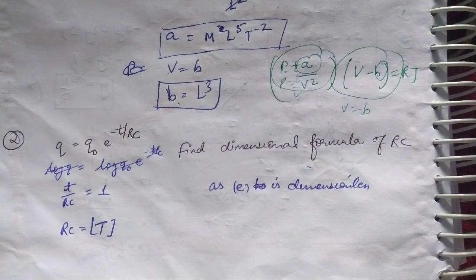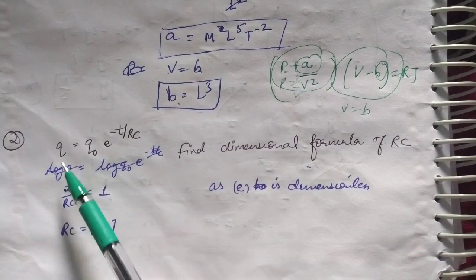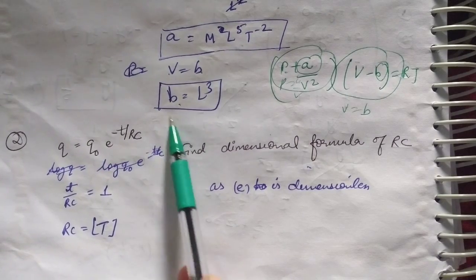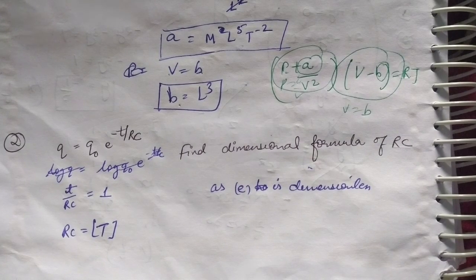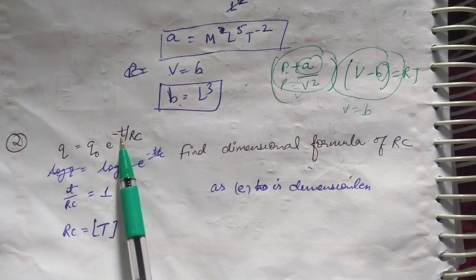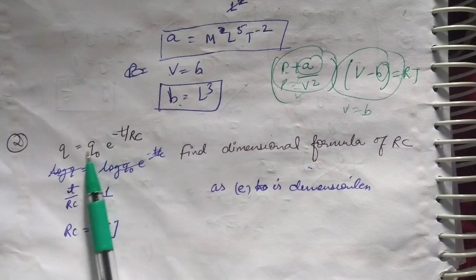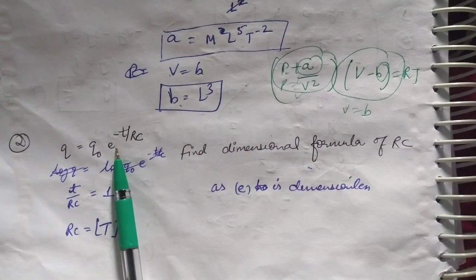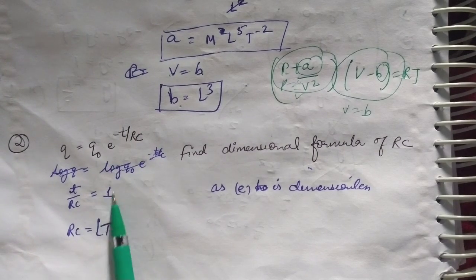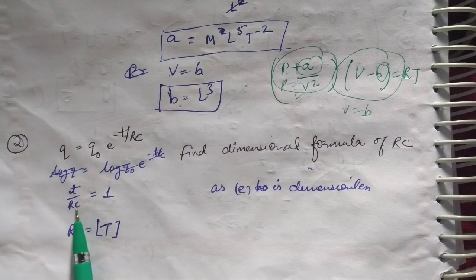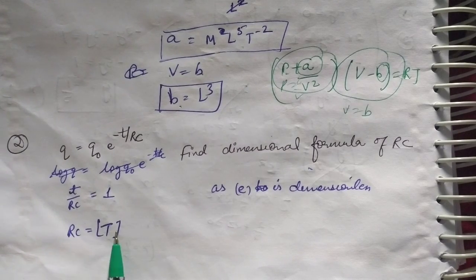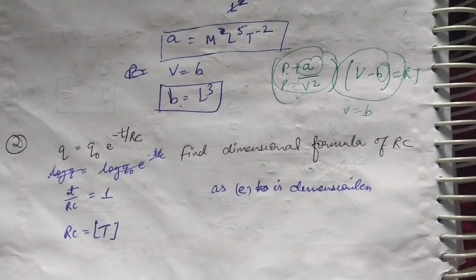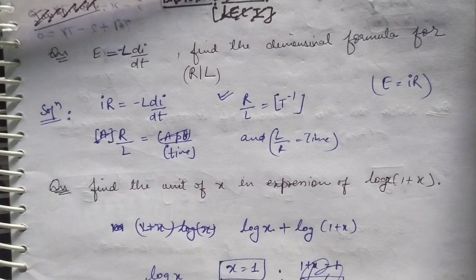Next question: given q = q₀ · e^(t/RC), we have to find the dimensional formula for RC. We know that exponents and constants are dimensionless. Therefore t/RC equals 1, which means RC equals t. Since t is time, the dimension of RC is T — time only.